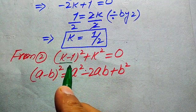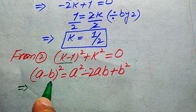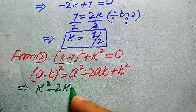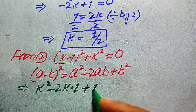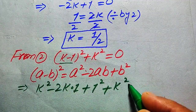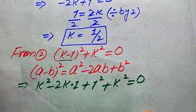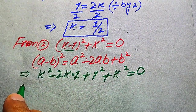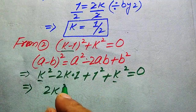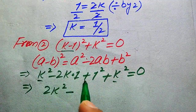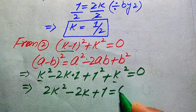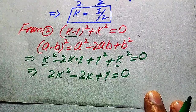Expanding (k minus 1)² gives k² minus 2k·1 plus 1², and adding k² gives: k² minus 2k plus 1 plus k² equals 0, which simplifies to 2k² minus 2k plus 1 equals 0.